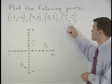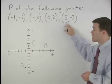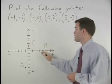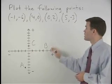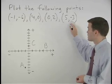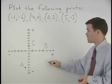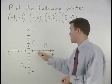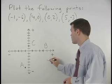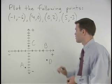For the point 5, negative 3: since the x coordinate is 5, that tells us we move 5 units to the right from the origin. Since the y coordinate is negative 3, that tells us we move 3 units down from the origin. So we go 5 to the right and 3 down, and label that point D.